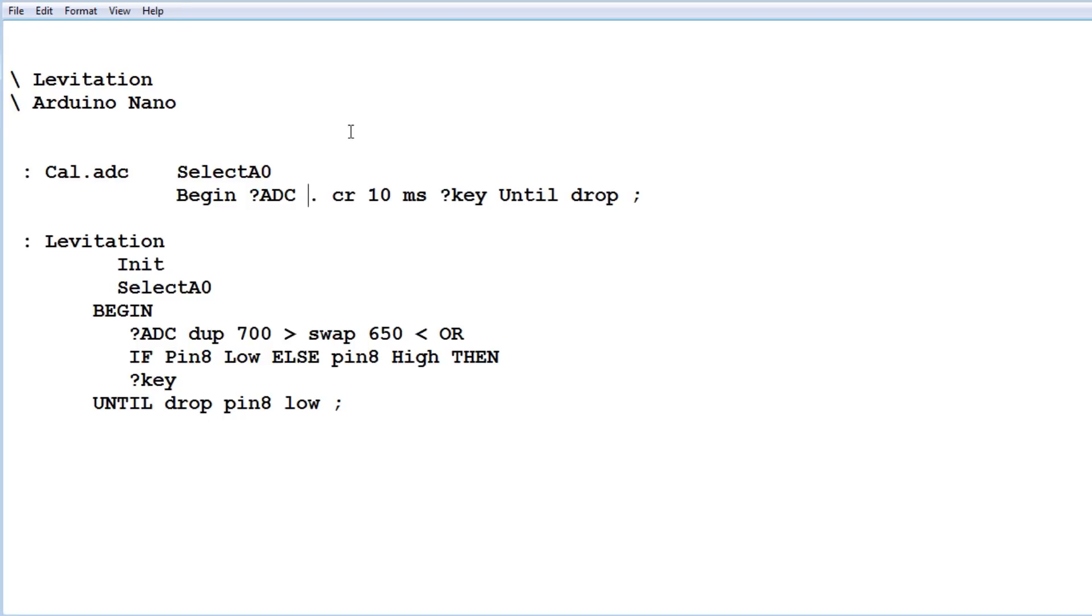So I can calibrate it, I can bring the magnet up close to the Hall Effect switch until I find my levitation point. And once I find that levitation point, I read the ADC value, in this case it was 700, so I'm going to use that in my code.